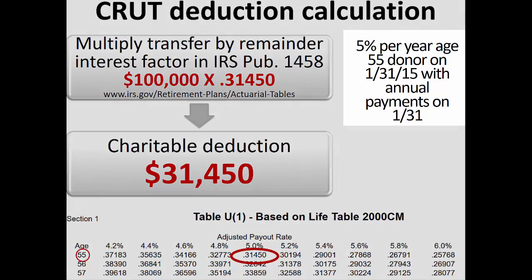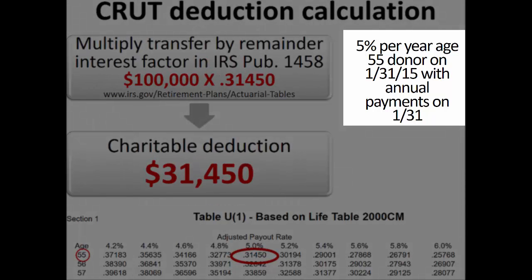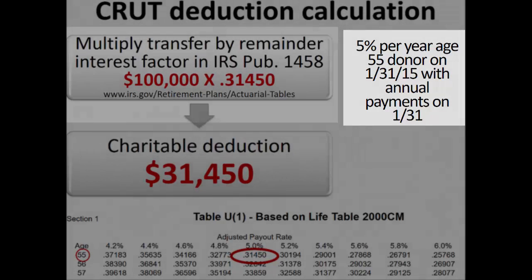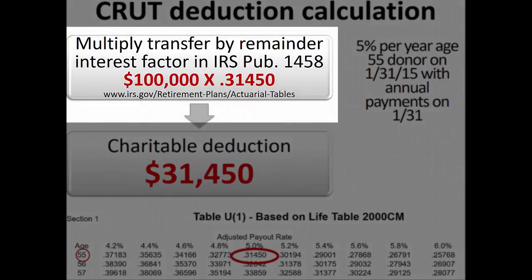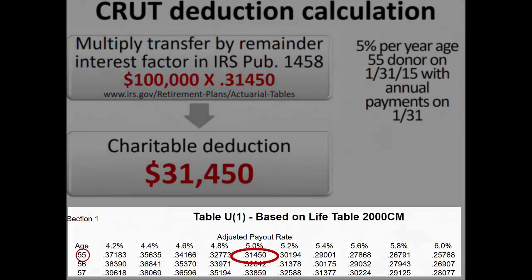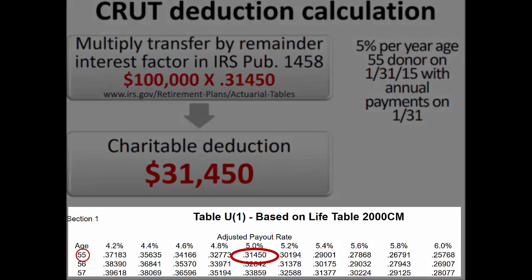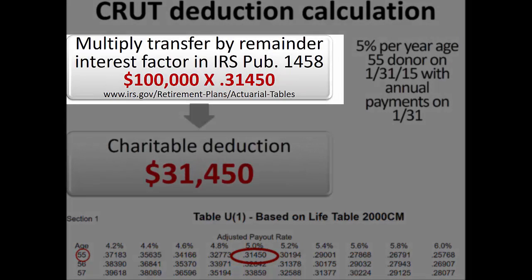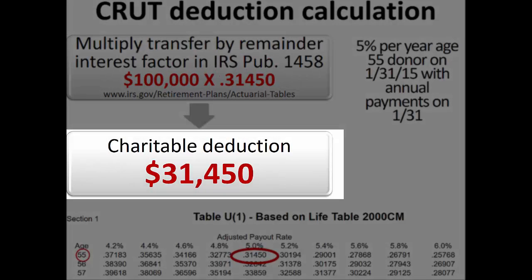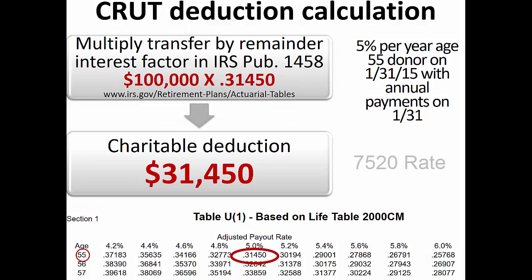To calculate the deduction for the age 55 donor receiving a 5% payout rate, simply multiply the initial transfer amount by the remainder percentage found in Table U at the same website. This remainder interest is 0.31450 which, when multiplied by the $100,000 initial transfer, results in a charitable deduction of $31,450. Notice that we did not use the Section 7520 interest rate in the calculation of the charitable income tax deduction for a charitable remainder unitrust.